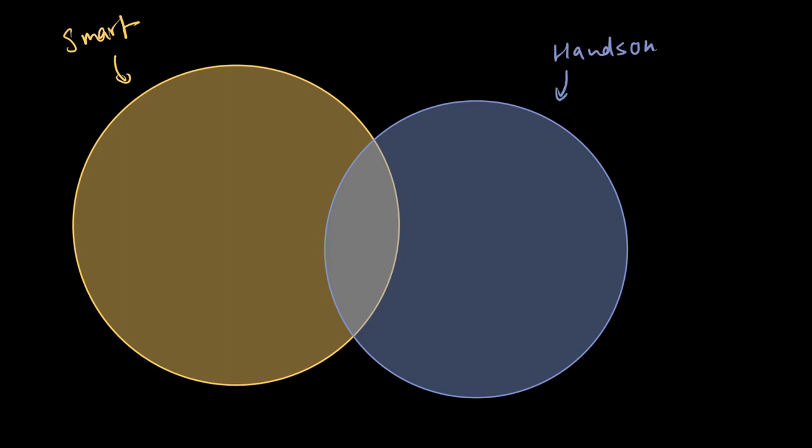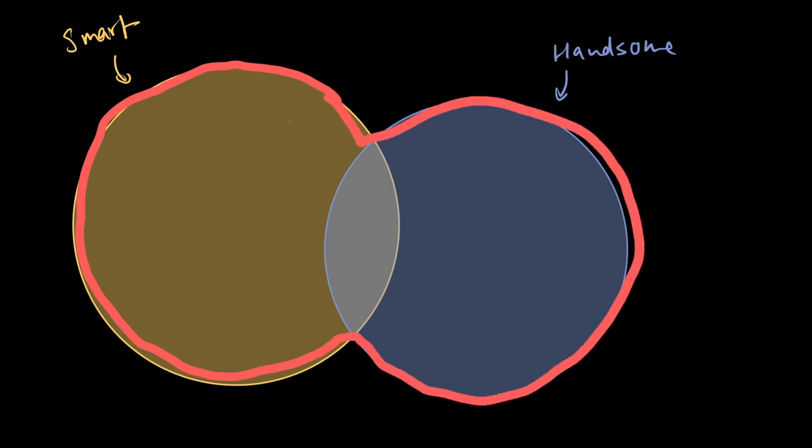Now if you take the values from both the sets and make a bigger set, when you take values from both sets and make a bigger set, you call that a union. That means in this particular union you'll have the people who are both smart and handsome, you and me.